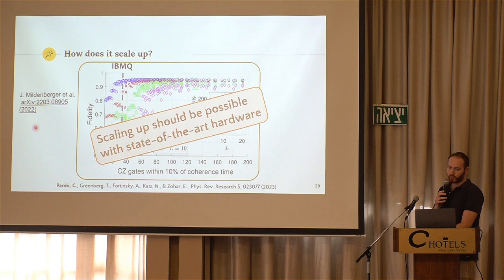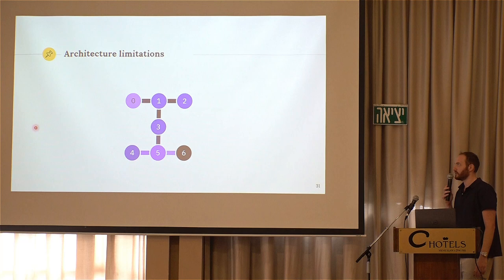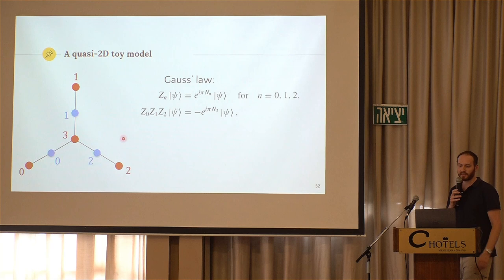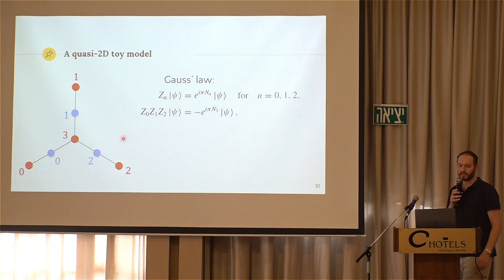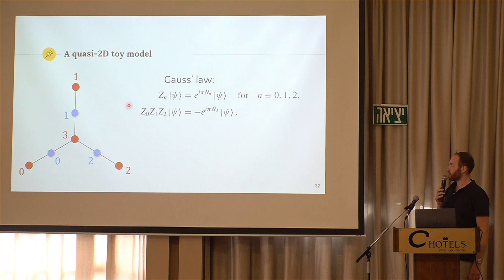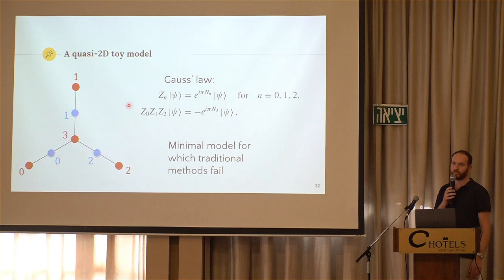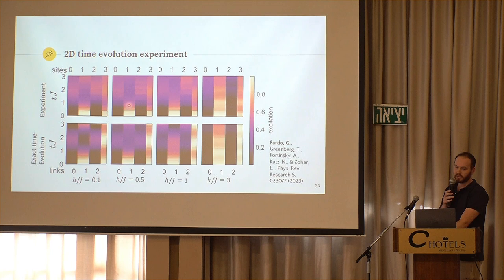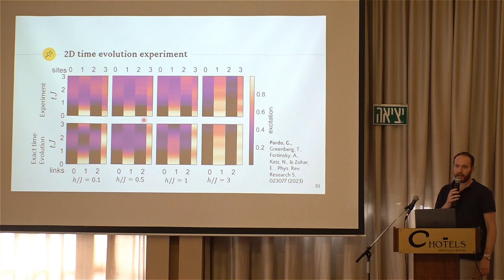So we wanted to do also something two-dimensional. This is problematic in the IBM devices because they don't have square lattices, only these kinds of things. So what we ended up doing is this ridiculous toy model that is not interesting to almost anyone. It's an almost two-dimensional model and the only reason it's interesting is from the point of view not of physics but of the method itself. Because this is the minimal example for which the traditional method doesn't work. The traditional method I mean solving for the field instead of for the matter. So we did also time evolution on this model and again it looks okay relative to the exact time evolution.